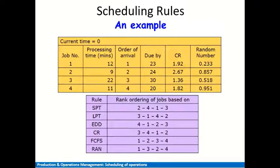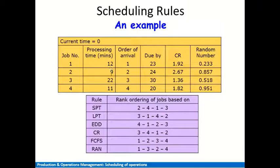The second scheduling rule is Longest Processing Time (LPT), where the job with the longest processing time is taken first. Among all four jobs, the longest processing time is job three at 22 minutes, so it goes first. Next is job one at 12 minutes, then job four, then job two. The LPT sequence is: 3, 1, 4, 2.